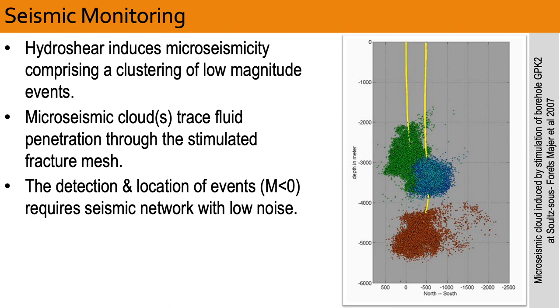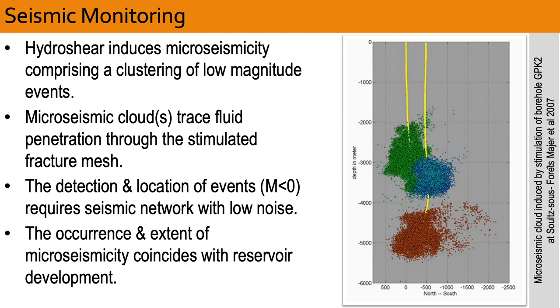Importantly, the occurrence and extent of micro-seismicity illuminates how and where the reservoir is being developed, and it can be used to interpret the stress field. It is a key tool in advancing EGS technology. The example on the right, from Soultz, shows micro-seismicity extends outwards from the point of injection up to about 1,000 meters.